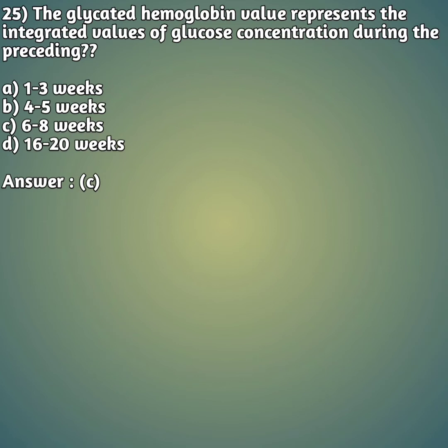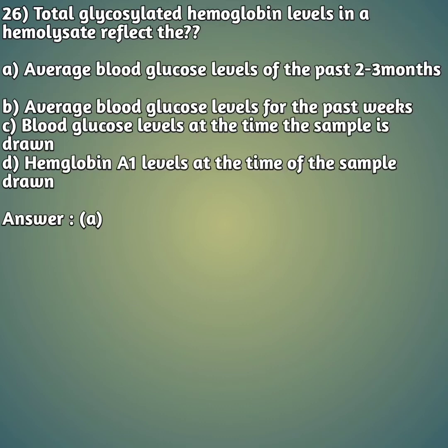Question 26: Total glycosylated hemoglobin levels in a hemolyzed sample reflect — option A: average blood glucose levels of the past two to three months, option B: average blood glucose level for the past weeks, option C: blood glucose level at the time the sample is drawn, option D: hemoglobin A1 levels at the time the sample is drawn. The right answer is option A, average blood glucose levels of the past two to three months.